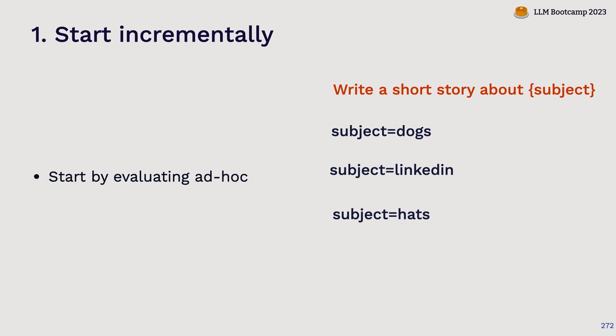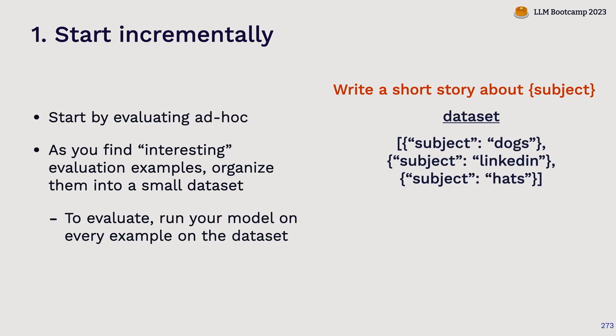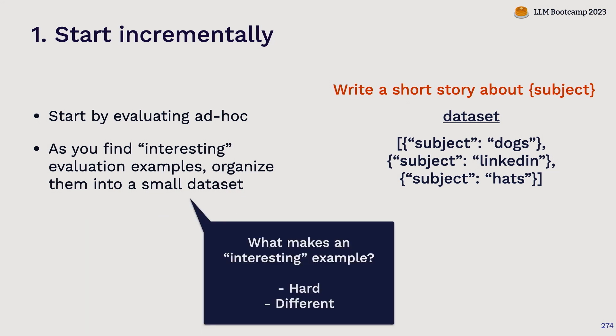So we start incrementally. If I'm writing a prompt — say a prompt that helps me write short stories — I'll start by just typing what I want into ChatGPT and playing around to see if I can get it to do what I want. Once I find something reasonable, I'll move to a templated prompt where rather than asking for a short story about dogs and then LinkedIn, I instead have the ability to pass in a different subject by filling in the template. Then I'll evaluate ad hoc — try out different subjects one after another. The way I start to systematize that is: as you find interesting evaluation examples, collect those examples and organize them into a small dataset.